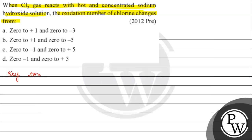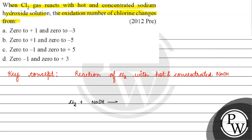The key concept for this question is the reaction of chlorine with hot and concentrated sodium hydroxide. अगर बात करते हैं, हमारे पास reaction होगा chlorine का और sodium hydroxide का, और sodium hydroxide हमारे पास hot and concentrated हो तो basically उस case में